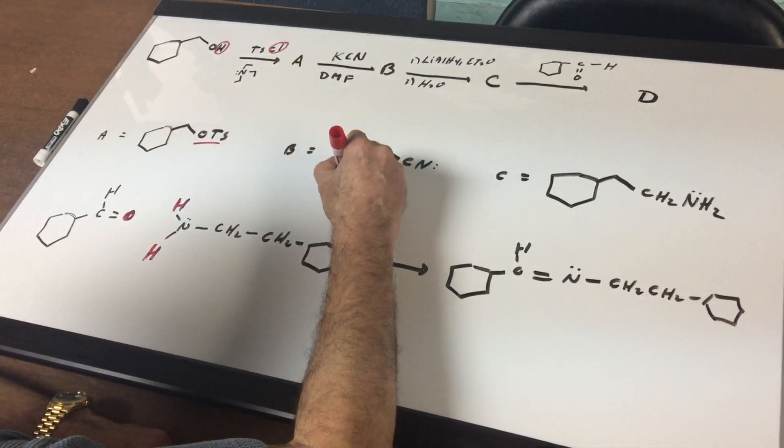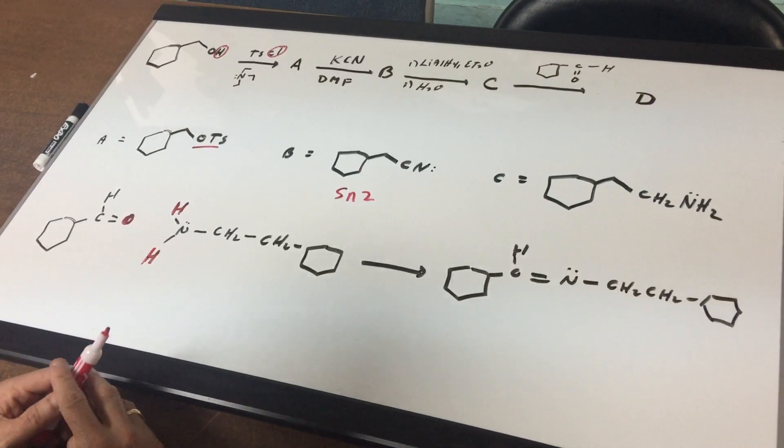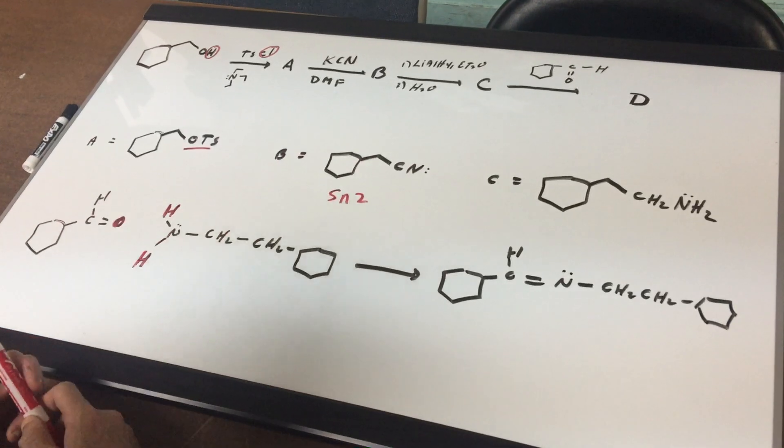A to B, that's going to do what we call an SN2. Anytime you see cyanide, always think about an SN2. So we're going to kick out the leaving group and we put in the nucleophile.